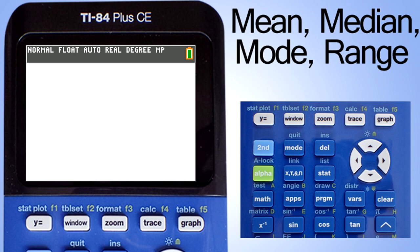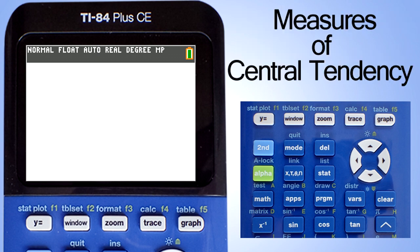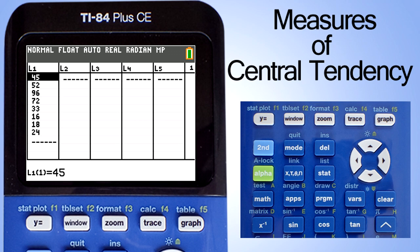The mean, median, and mode are sometimes called measures of central tendency. We're going to use the list feature on the calculator to find the measures of central tendency of these 10 numbers.